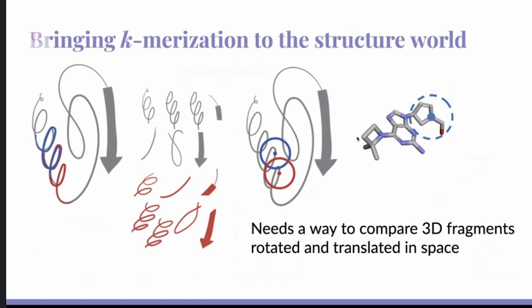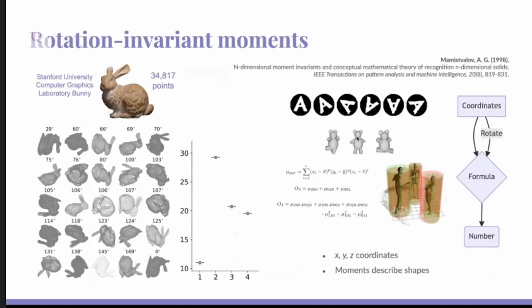You can look at overlapping coordinates in the backbone, or you could look at overlapping radii and have some atoms within them. But of course, these are all in three-dimensional space. So they're rotated and translated, so you can't really say this one is equal to this one like you could with amino acids. And so for this, I looked into rotation invariant moments.